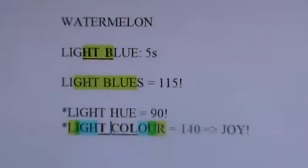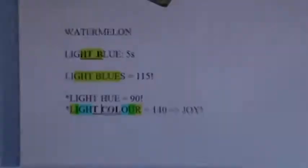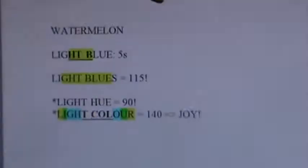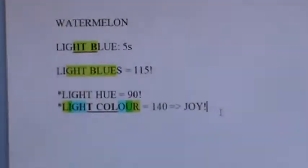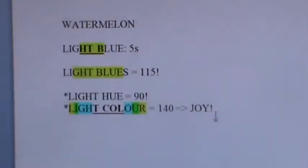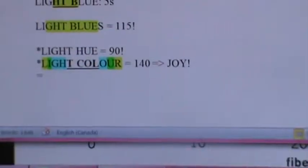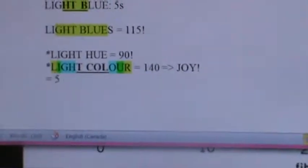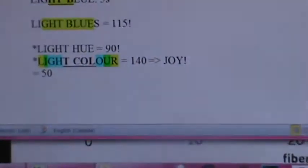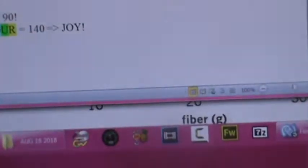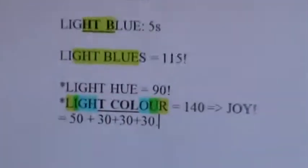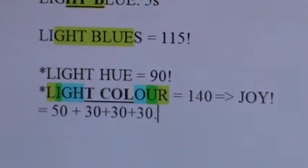Like a light blue, and you will notice the joy. Or a light green, and you notice the joy coming at the center. This is such a beautiful equation: it's 50, which is joy, plus 30 plus 30 plus 30 in symmetry. Light color, amazing.